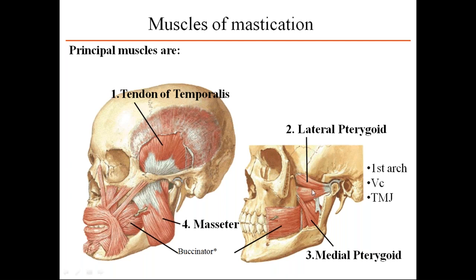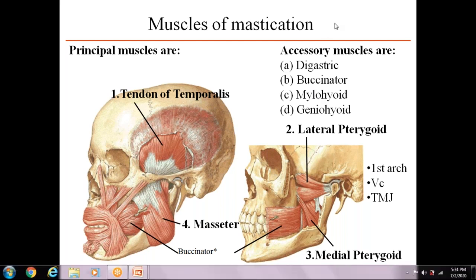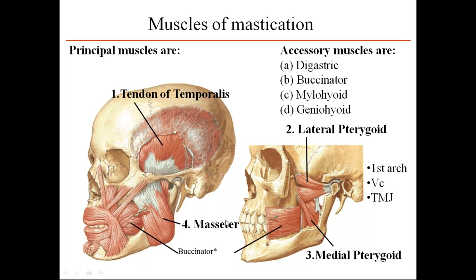The muscles help in the movement of the temporomandibular joint, and all have common insertion into the mandible. The accessory muscles of mastication are digastric, buccinator, mylohyoid, and geniohyoid. The principal muscles are temporalis, lateral pterygoid, medial pterygoid, and masseter.